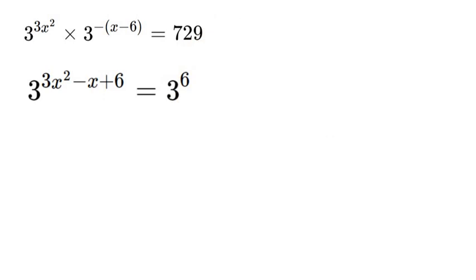So what you just saw there is simplifying out basically the whole equation. So we brought our 729 down to 3 to the power of 6. Now it has the same base as everything else involved in the function and we also simplified our 3 to the power of 3x squared times our 3 to the negative x minus 6.